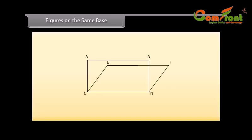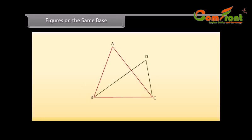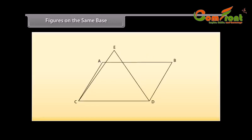Figures on the same base. Look at this figure. We have got two figures here: a rectangle ABCD and a parallelogram CDEF. We can see that both the figures are on the same base, CD. Similarly, in this figure, triangle ABC and triangle BCD are on the same base, BC. Here, triangle ECD and a parallelogram ABCD are on the same base, CD.